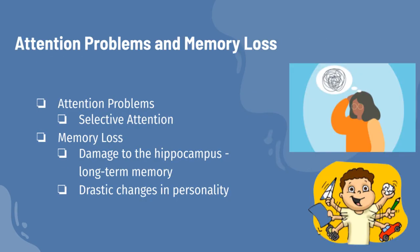Lastly, I'm going to be talking about attention and memory loss associated with the temporal lobe. Temporal lobe damage can affect a person's selective attention, meaning they have more difficulty picking out one thing to pay attention to among several others — for example, they wouldn't be able to focus on a private conversation in a loud crowded room or study while music is playing. The hippocampus, the structure responsible for forming emotional long-term memories, is located in the temporal lobe. Memory problems are a very common side effect of temporal lobe damage. The most common is difficulty forming new long-term memories, but damage can also erase personality-defining memories, causing a drastic change in self-image and even personality changes after brain injury.